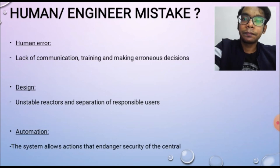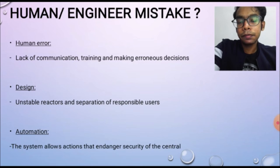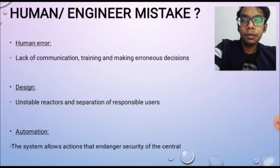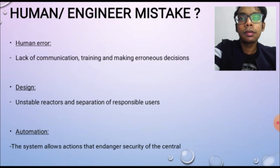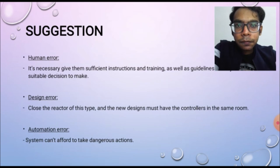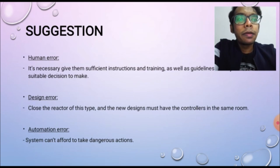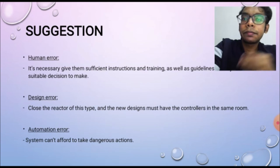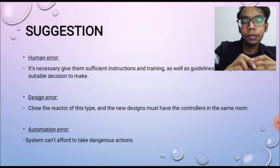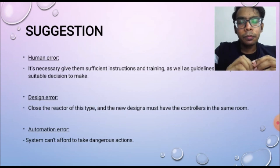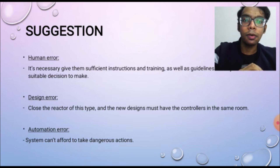Moving to point three — automation. The system used at Chernobyl is very unsafe because it allows actions that could endanger the security of the plant. Moving to suggestions: this tragedy could have been prevented. The first suggestion is to provide proper training, a set of instructions, or SOPs to the workers.